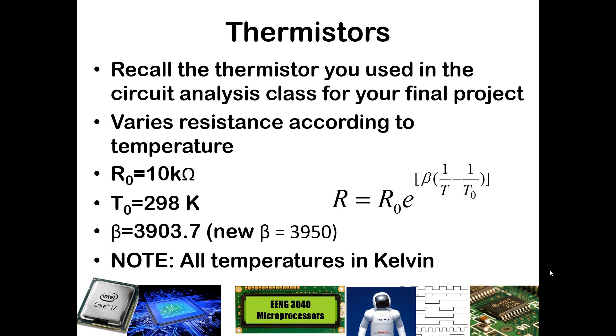So if you recall from your circuit analysis class, a thermistor is a temperature-varying resistance. Inside a thermistor, the resistance will change based upon the temperature that it is either submerged in, in the case of putting it in a hot or cold liquid, or just the ambient environment surrounding it. A thermistor is governed by the equation that you see here: R equals R-naught E to the beta times 1 over T minus 1 over T-naught.